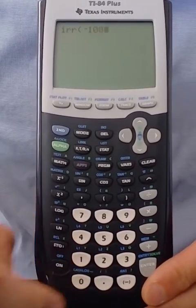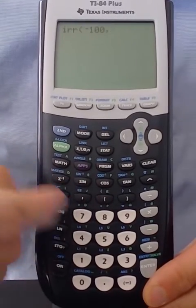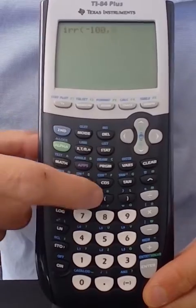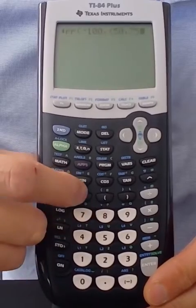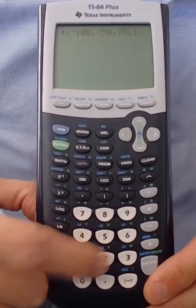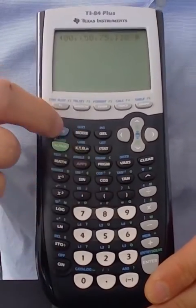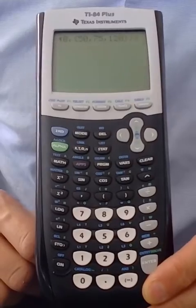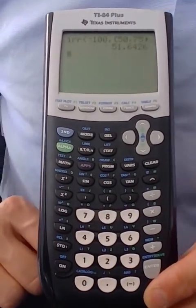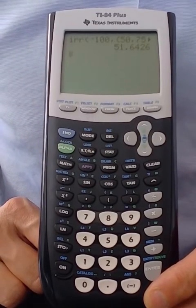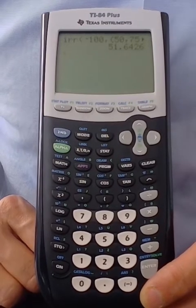comma curly bracket and the cash flows were 50 comma 75 comma 120 close the first set of brackets and then close the second set of brackets hit enter and we see that the internal rate of return or IRR of this stream of cash flows is 51.64 percent